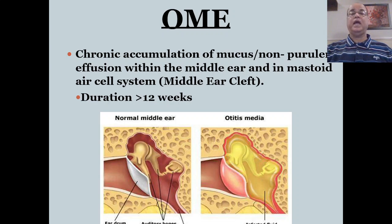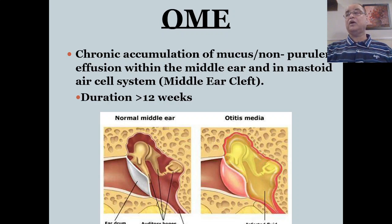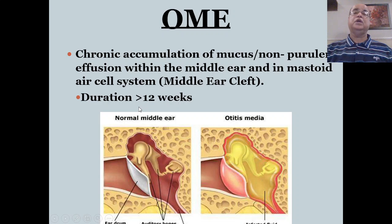This is a chronic inflammation with accumulation of mucus — of course non-purulent effusion — within the middle ear cavity and mastoid air cell systems. When we say chronic accumulation, it means the duration of symptomatology should be at least more than 90 days.